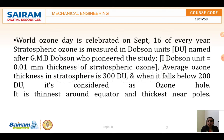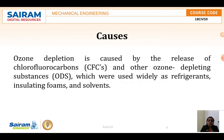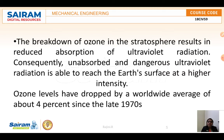The ozone layer is thinnest around the equator and thickest near the poles. Ozone depletion is caused by the release of CFCs — chlorofluorocarbons — and other ozone depleting substances, which were widely used as refrigerants, insulating foams, and solvents. These chemical compounds contain gaseous chlorine or bromine released from industry, which increases the rate of UV rays transferring directly to the Earth's surface.